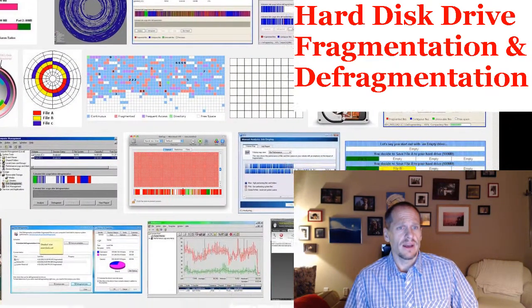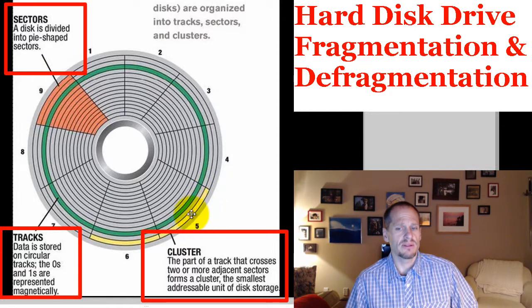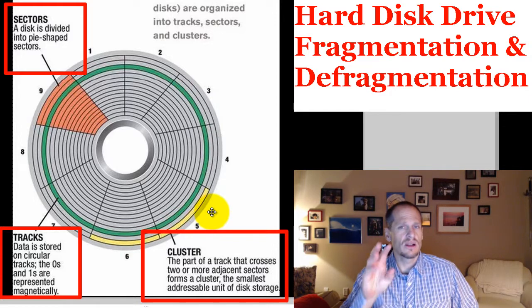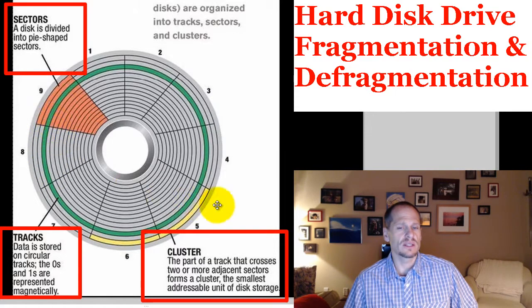With hard disk drives, we have this image here which we've already looked at, where we have the tracks going around the platter. Then we break those tracks up into sectors, and a couple of sectors together are known as a cluster. That's the smallest addressable place — those are the little cubby holes where zeros and ones can get put.